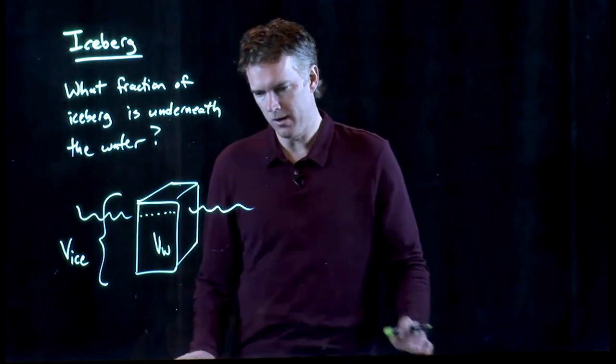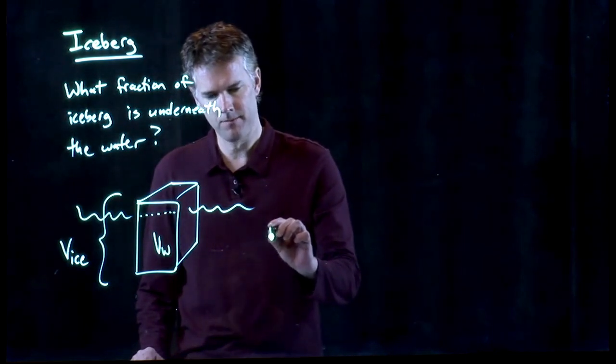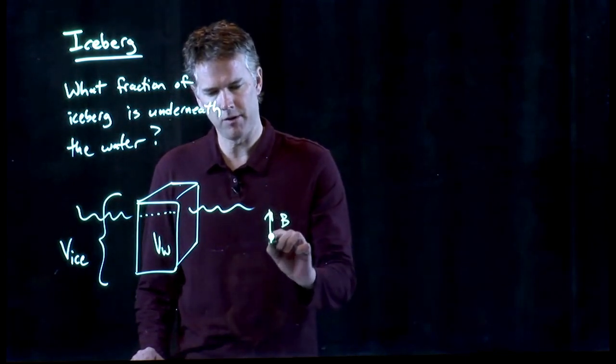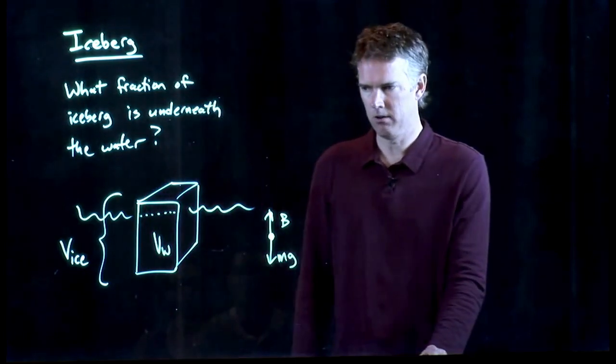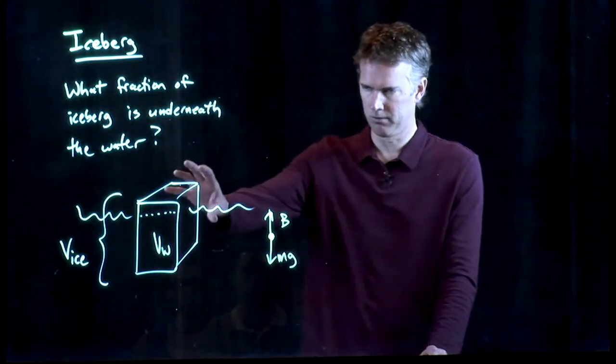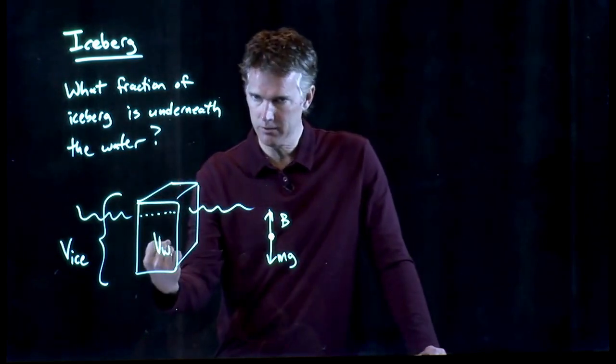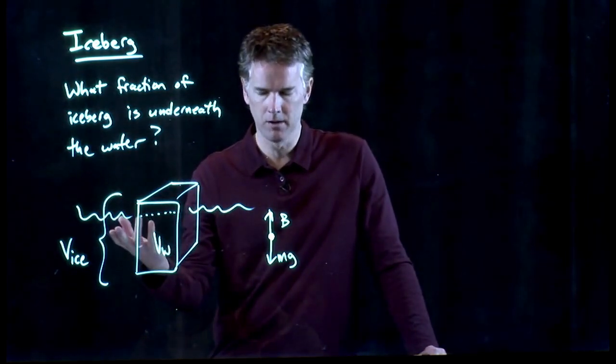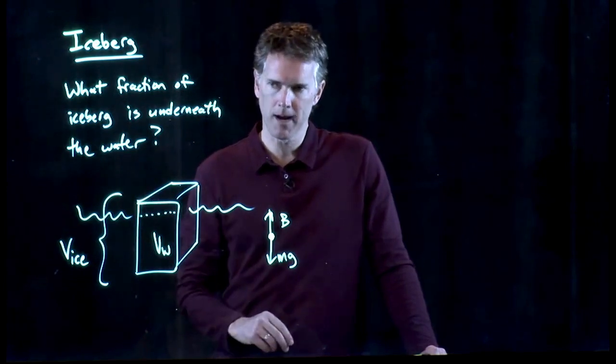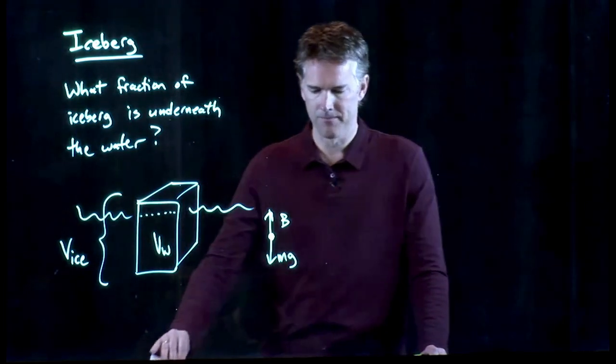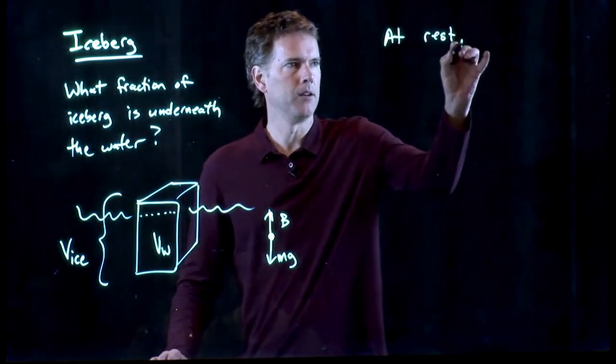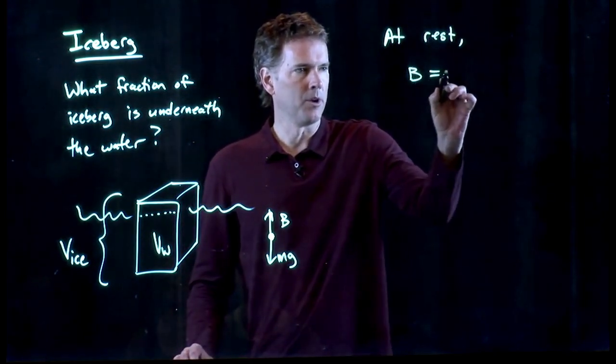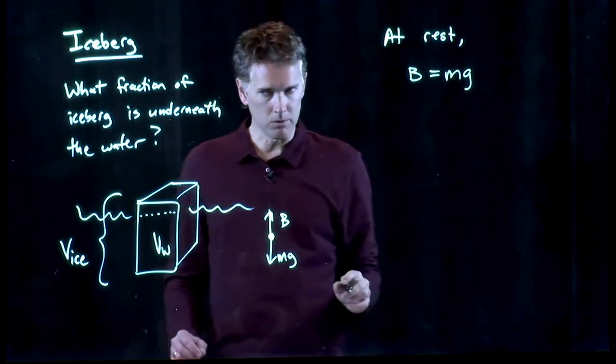What we know is that if it's floating there, the buoyant force up has to equal the gravitational force down on the ice. Gravity's pulling down on the ice just like pulling down on everything else. The buoyant force pushing it back up has to be equal to that. The whole thing's at rest. It's not bobbing up and down. And so we know that the buoyant force has to be equal to mg.